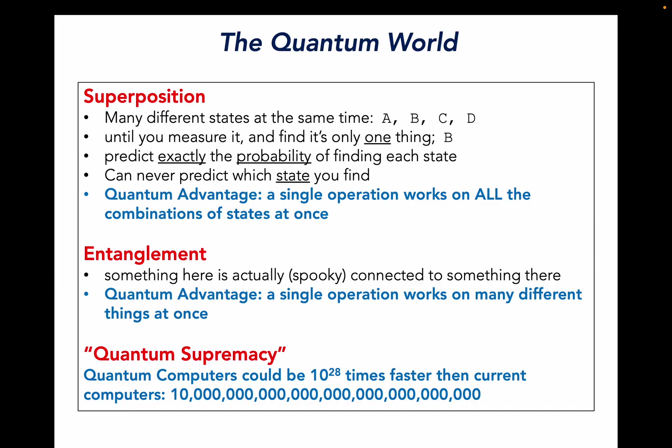In the quantum world, quantum computers could be more powerful because of superposition. That is, a quantum entity could be at many different states at the same time until you measure it, and then you only find one thing. We can predict exactly the probability of finding each state, but we can never predict exactly which state we will find. This provides a quantum advantage, that a single operation works on all those combinations of states at once. The second thing quantum allows us to do is called entanglement. Something here is actually in some odd way connected to something else over there. Again, a single operation can work on many different things at once.